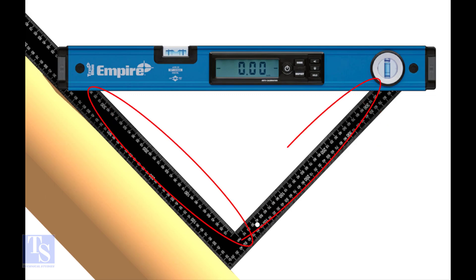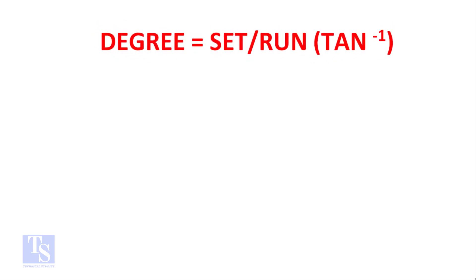Now we have the set and the run of the pipe. Let us apply the tan theta rule. Degree equals set divided by run, tan inverse.